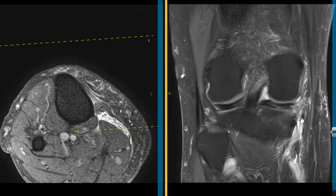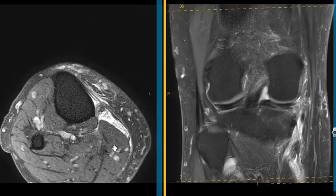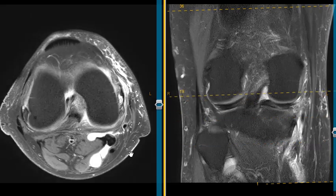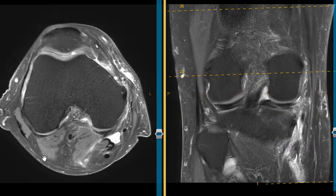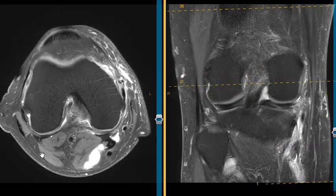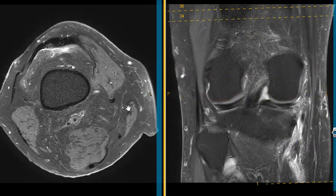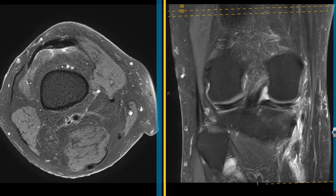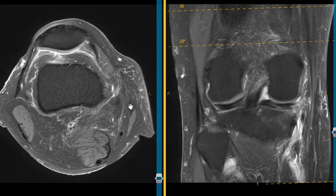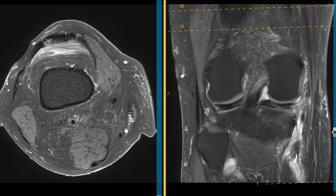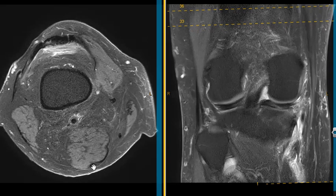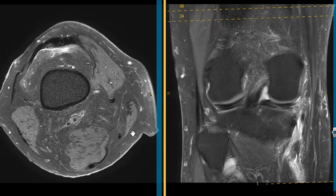So this is part of the pes anserine tendon complex. We'll go up here to look at that in the axial views. The pes anserine tendon complex has the sartorius, which is here, the muscle turning to the tendon. This is the gracilis. And then we have the semi-tendinosis, which is back here. So these are the one, two, three components of the pes anserine tendon complex.